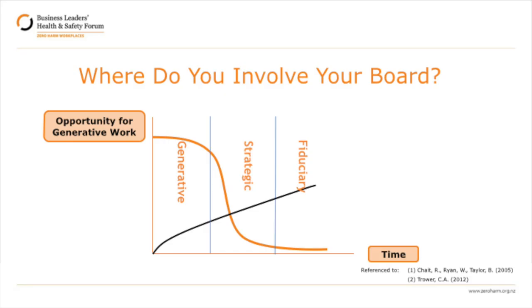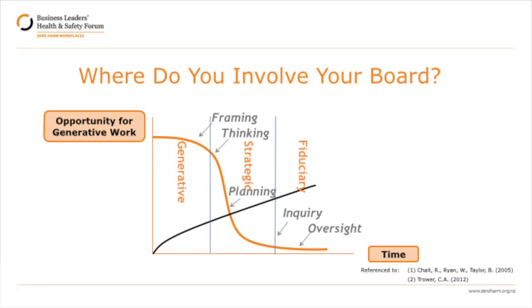Why this is really important is revealed in this slide. There are three really important elements for boards. The first one, on your right, is fiduciary — where the role is stewardship and the responsibility is oversight. In the centre is strategic, where the role is as strategist and the responsibility is foresight. And then to the left, where generativity is, the role is sense maker and the responsibility is insight.